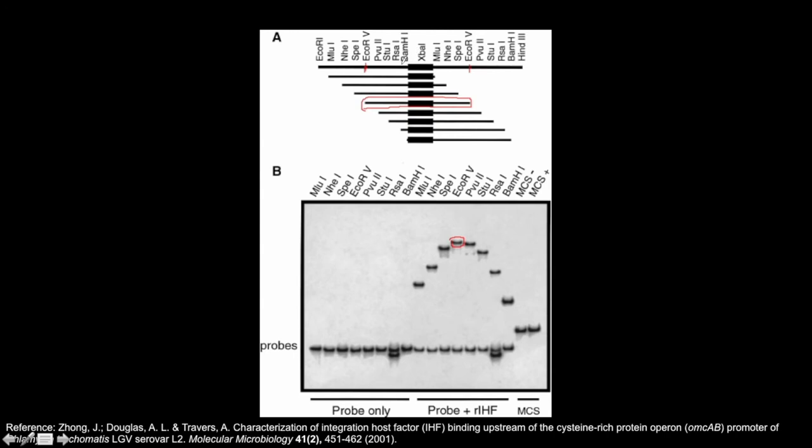Meanwhile, if we cut with BAMH1, we can see that the IHF binding region of the DNA is almost to the end. With the bend located at the end of the fragment, the resulting shape of the DNA gives the least resistance while migrating through the gel. This should result in the highest electrophoretic mobility, which is consistent with the researchers' results. How do you think the mobilities of the recombinant DNA cut with STU1 and PVU2 would differ? Pause here to predict.